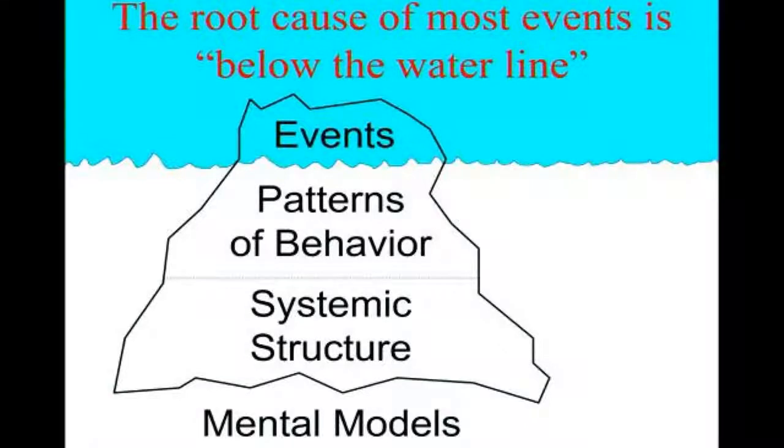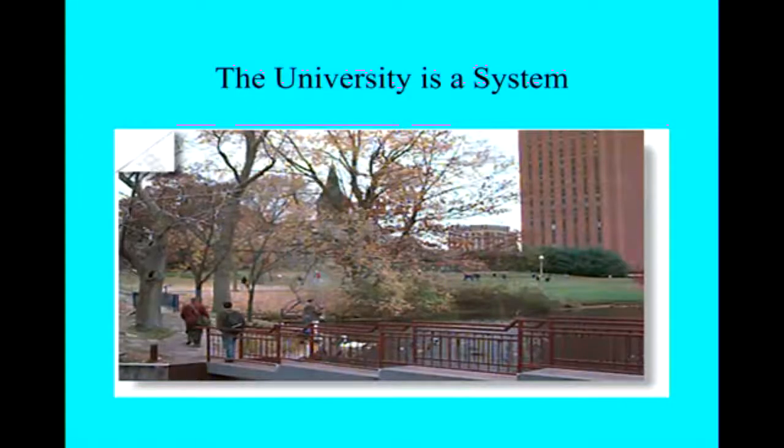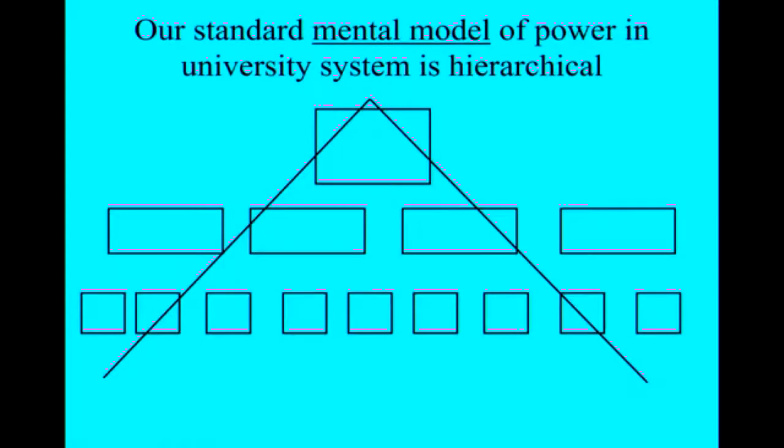So here, the university is a system. A university is a system that is based on a particular mental model of a hierarchy, of a power-over hierarchy. That is, there's people who have more power than you, and you have more power than others. And that mental model, that hierarchical mental model, which is true for corporations and for governments and for the military, is endemic in our world. It's part of the world we live in. And anyone who questions that mental model is perceived to be crazy, because that's the way it is.